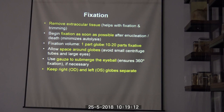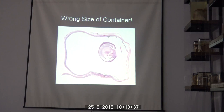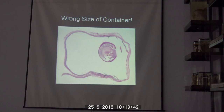Ideally, keep left and right eyes in separate containers. If you cannot, label a paper towel with pencil indicating right versus left, wrap the globe in it, and place it in formalin so you know which eye you have at trimming. Using the wrong size container may cause the globe to acquire the shape of the container, which can preclude evaluation of features like scleral thickness.